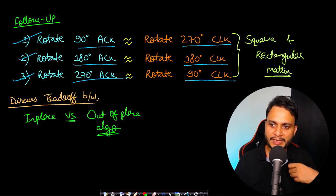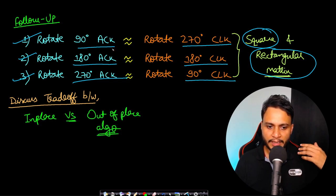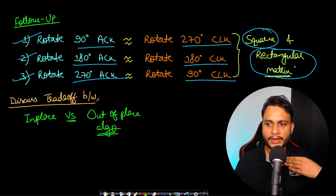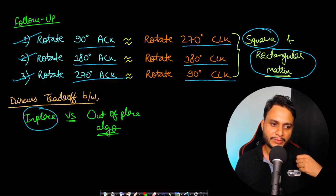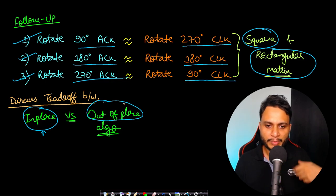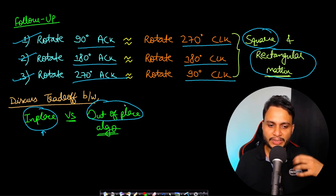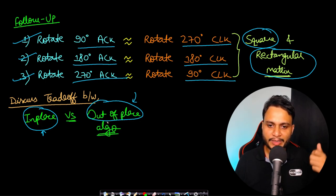All these problems can be asked for both square matrices and rectangular matrices. Every solution covered across the previous two videos and this third video will work for both square and rectangular matrices. Your solution should also not use extra space — it should be an in-place algorithm. Out-of-place algorithms require extra space, for example copying out an entire row or column elsewhere and copying it back. You can be asked to discuss the trade-off between out-of-place and in-place algorithms, which was already covered in the previous two videos.